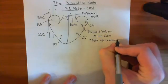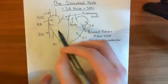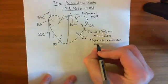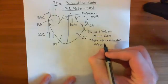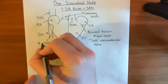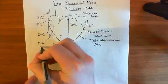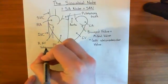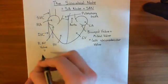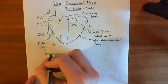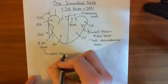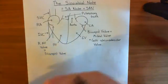Similarly, the valve between the right atrium and the right ventricle can be called the right atrioventricular valve — or AV valve for short. The other name for the right atrioventricular valve is the tricuspid valve, and that's because it has three actual flaps making it up.